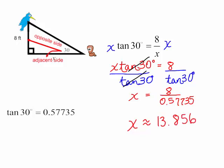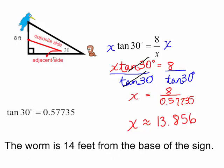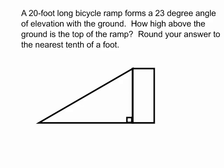Our original problem did say round our answer to the nearest foot. So instead of 13 feet, we will say that the worm is 14 feet from the base of the sign. Okay, one more problem.